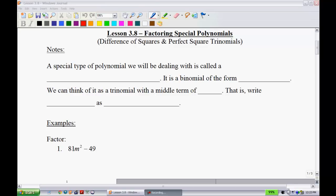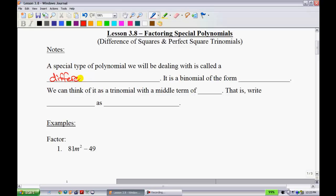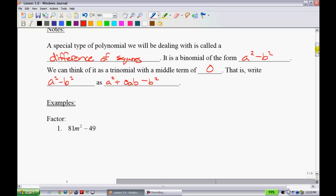We'll identify certain polynomials that cannot be factored using any of the methods we've done before. So we're going to look at these special cases. A special type of polynomial we'll be dealing with is called a difference of squares. It is a binomial of the form a²-b². We can think of this as a trinomial with a middle term of 0. That might be a little confusing, but when I dive into an example, you'll see how easy these can be.